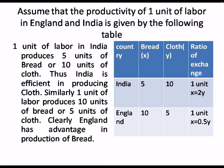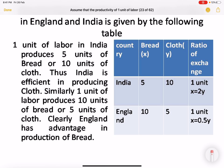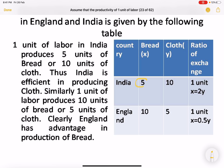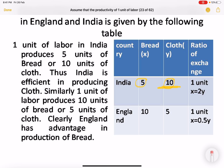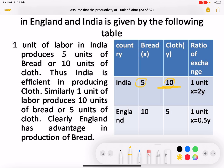Assume the productivity of one unit of labor in England and India is given in the following table. In India, one unit of labor produces 5 units of bread and 10 units of cloth. India is more efficient in producing cloth because it produces more cloth per unit of labor.